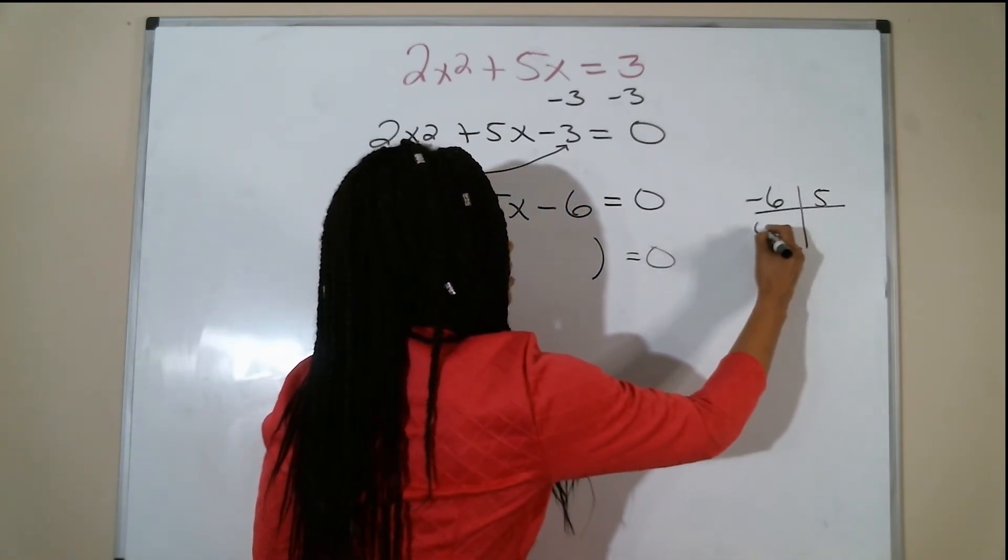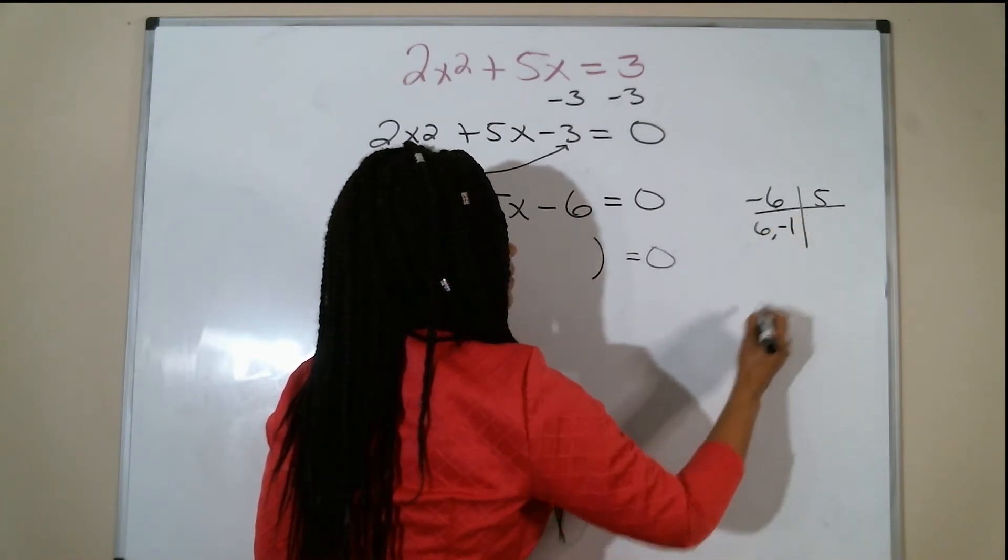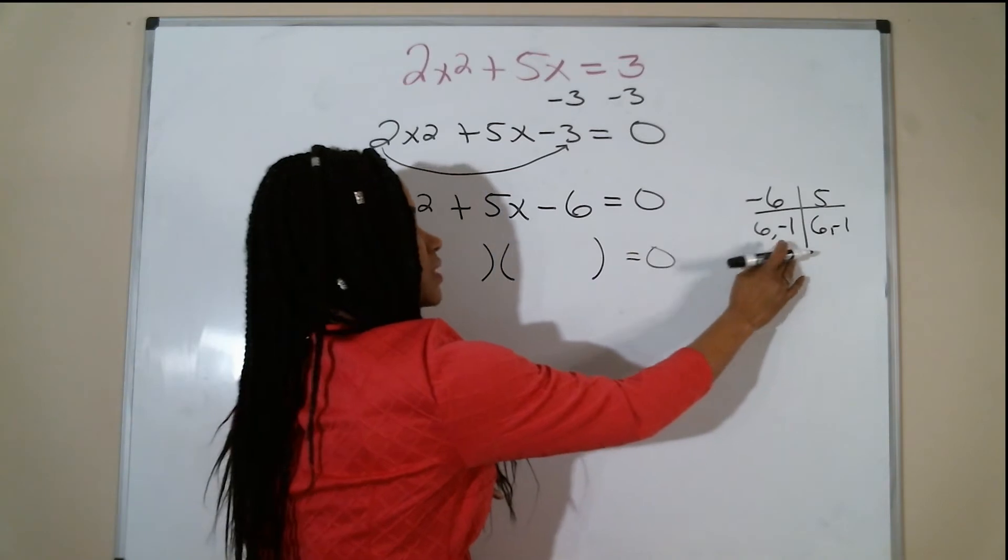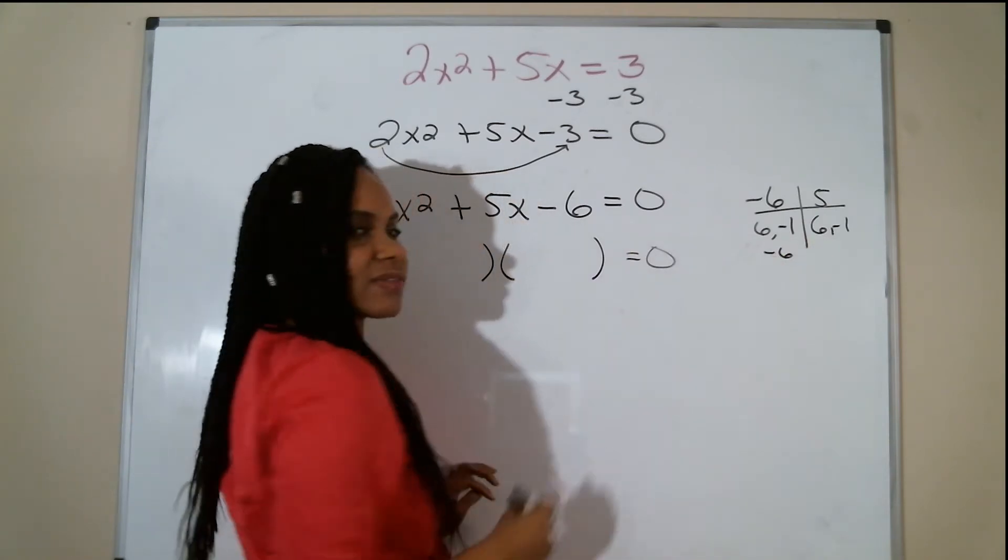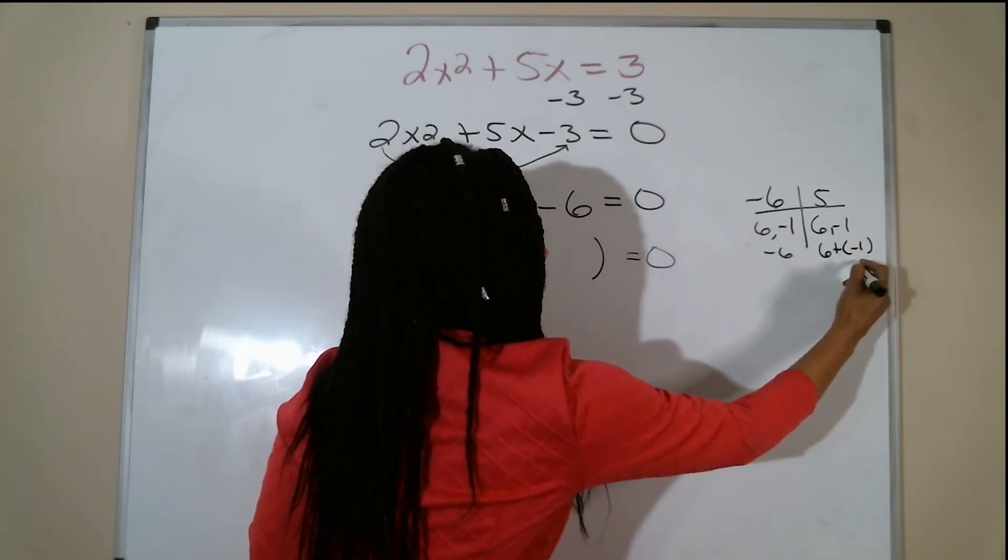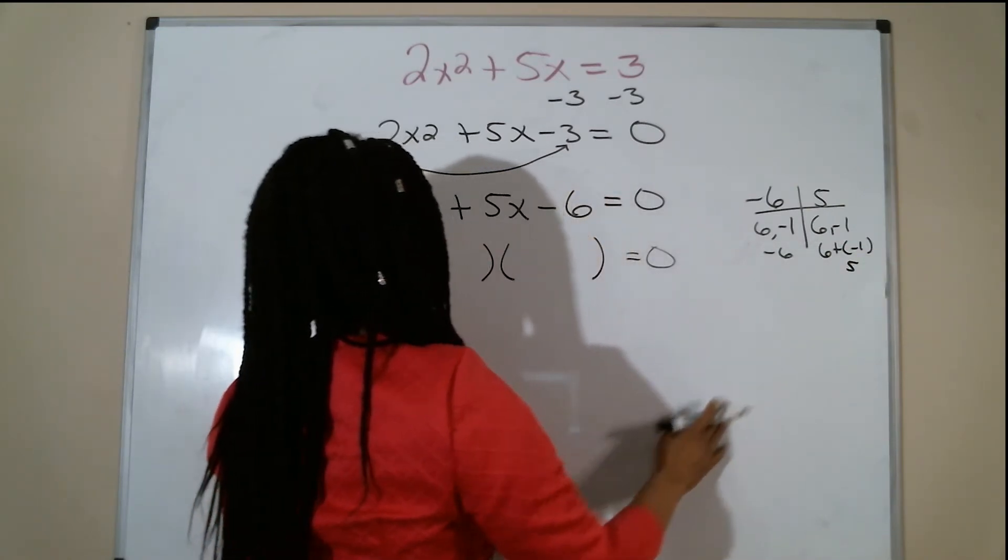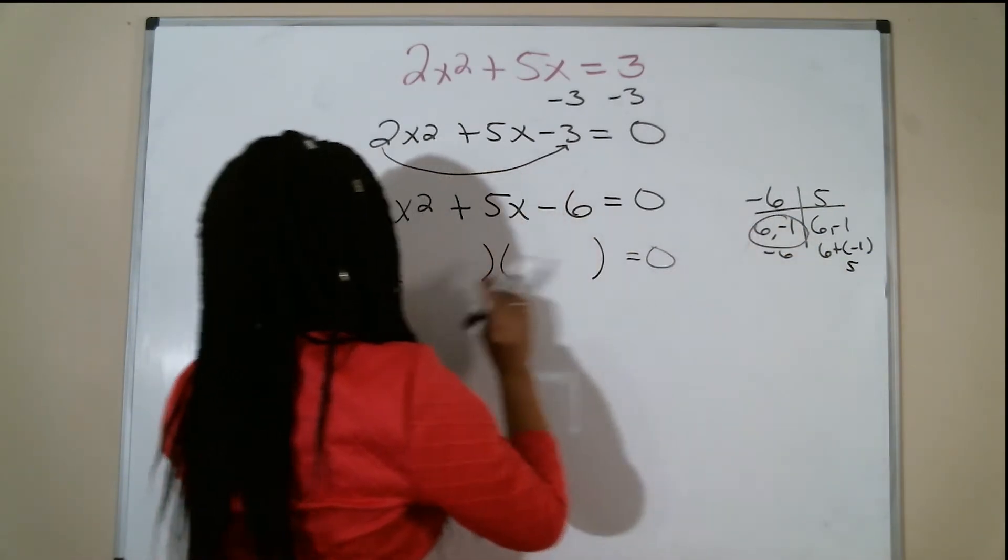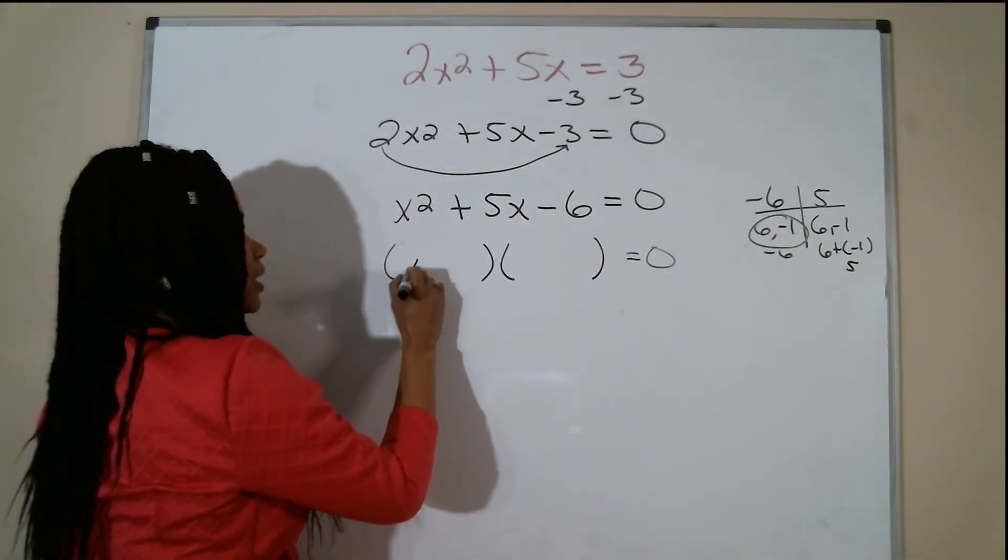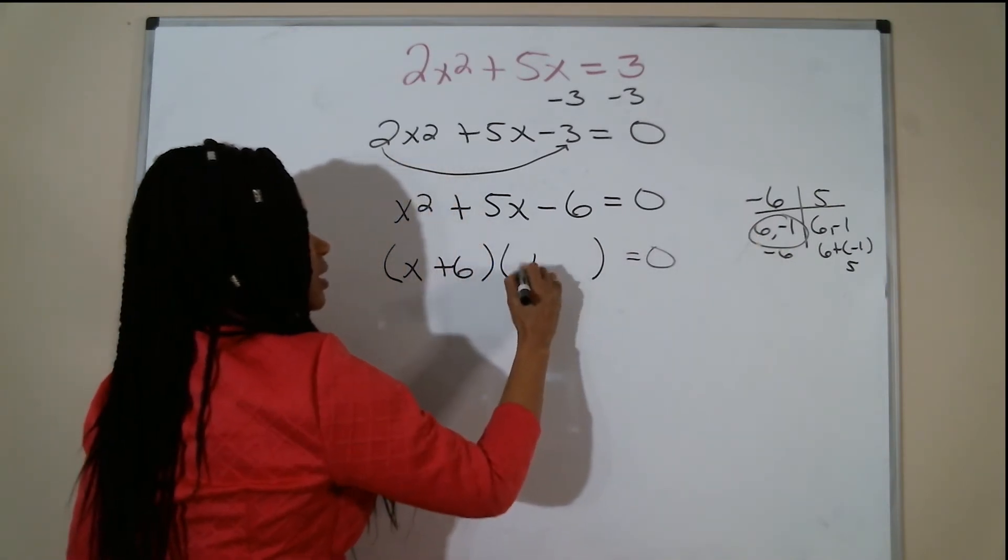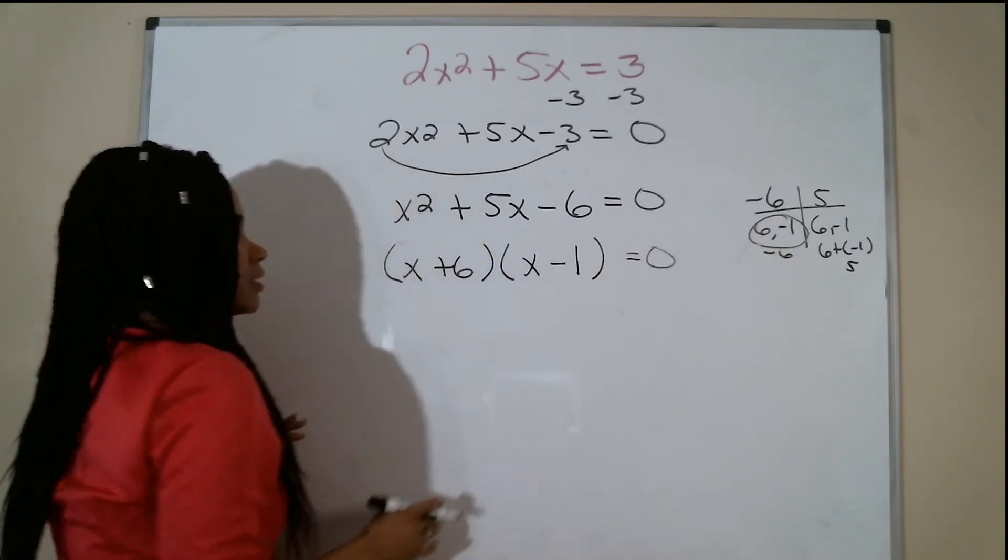Those factors are 6 and negative 1. If I multiply 6 times negative 1, I do get negative 6. But if I add 6 and negative 1, I do get 5. So my two factors are 6 and negative 1. My two binomials would be x plus 6 and x minus 1.